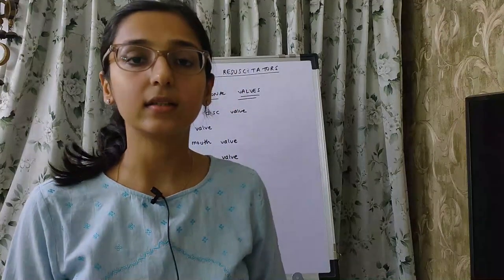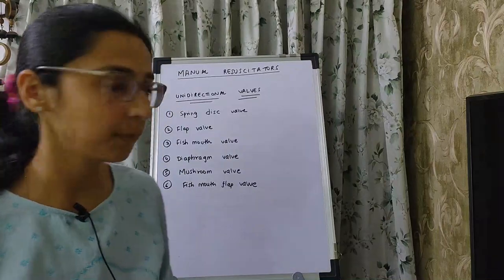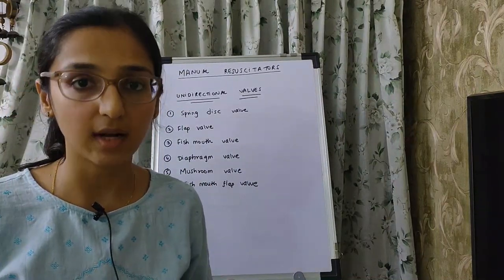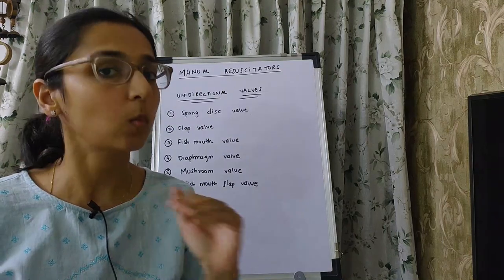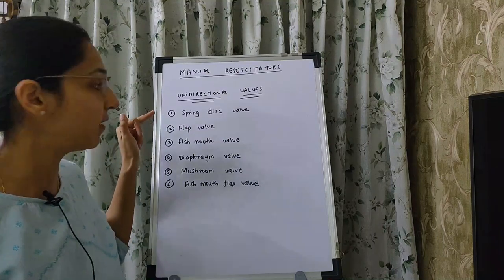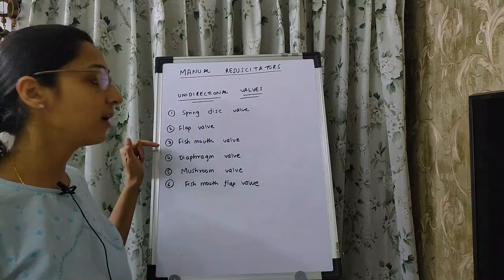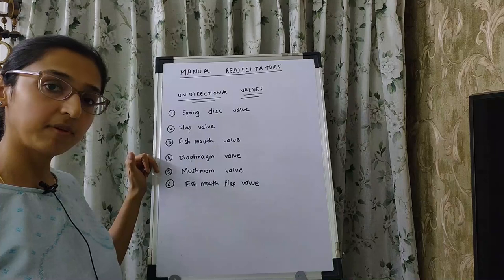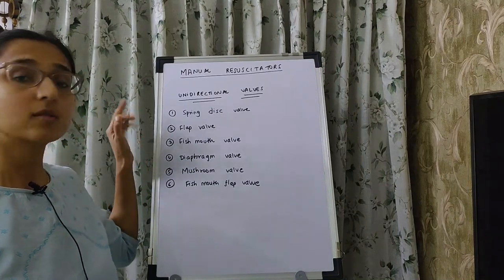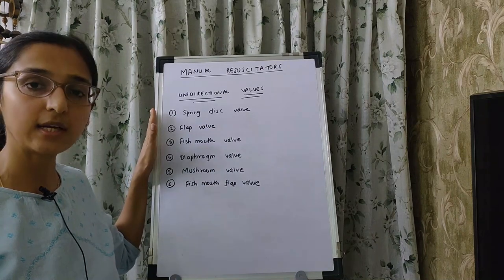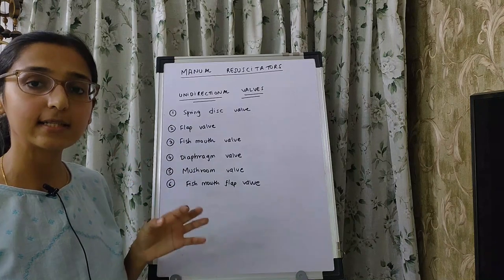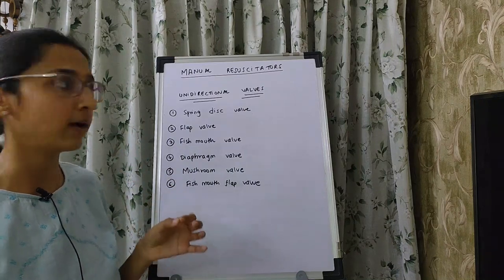Now let us understand the different types of valves in a manual resuscitator. These are unidirectional valves — they allow flow of gas in one direction only. They can be the spring disc valve, the spring unit valve, the flap valve, the fish mouth valve, the diaphragm valve, the mushroom valve, and the fish mouth flap valve. We have already understood the fish mouth valve and the disc membrane, which is a type of flap valve.